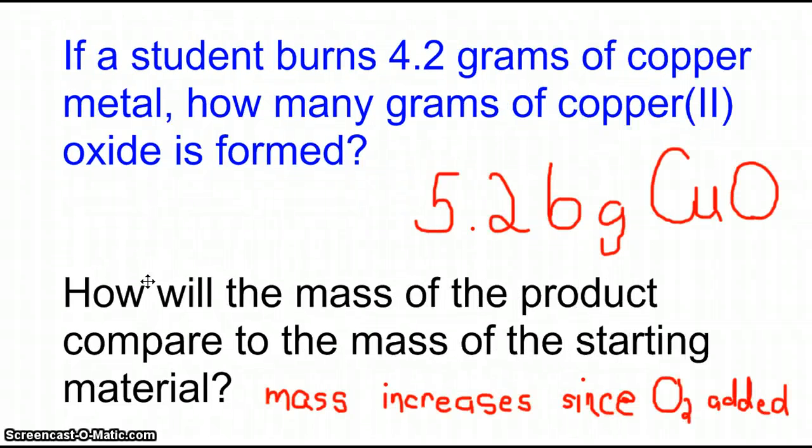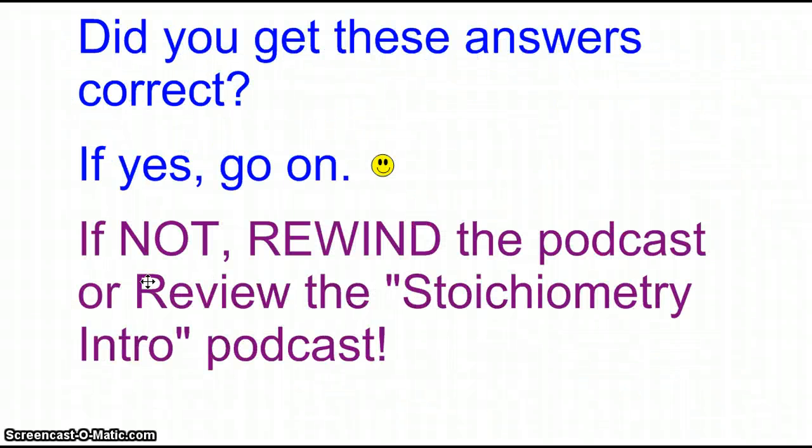Here's the answers. Now look, if you didn't get these correct, this is the time for you to stop, go back, go through the steps for stoichiometry. See if you can do it. If you're still confused, go back and view the earlier podcast on how to do stoichiometry problems. We're proceeding on with the concept of theoretical yield and percent yield in this podcast. So you need to have stoichiometry under control before moving on.